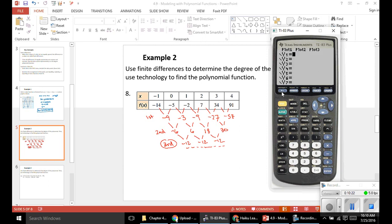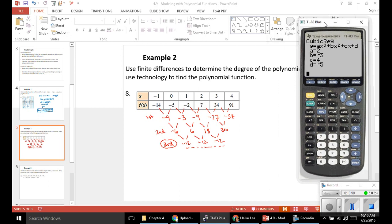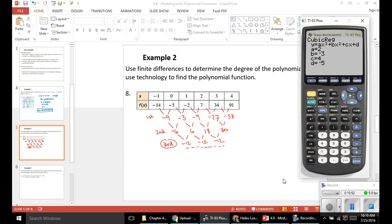And if we wanted to go to y equals, we could go vars, statistics, equation, insert our regression equation. And you can see it's 2x³ - 3x² + 4x - 5. And it's rounding very slightly there. That's just based on its calculations.